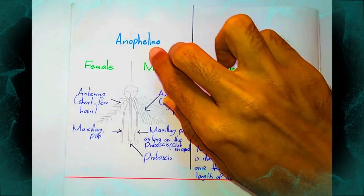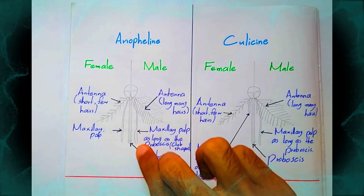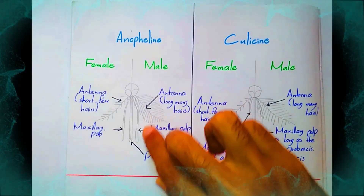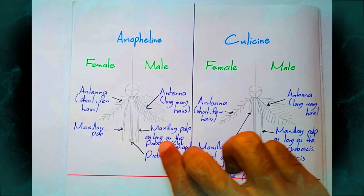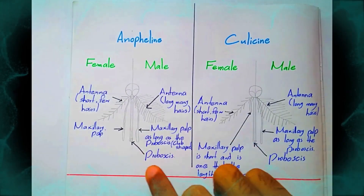In the anopheline male mosquito, the maxillary palps have a club shape.